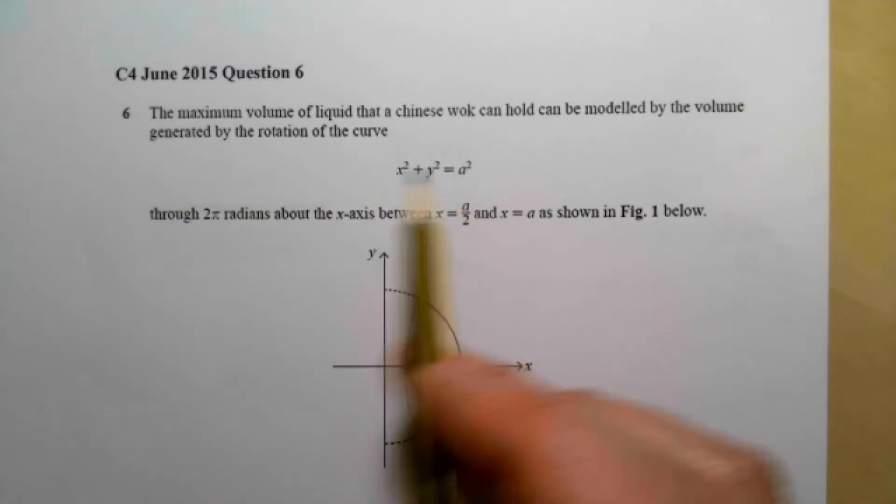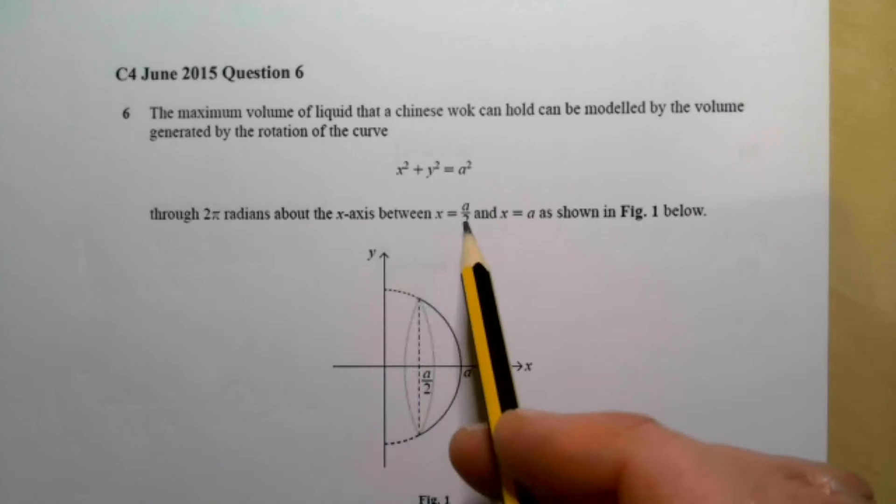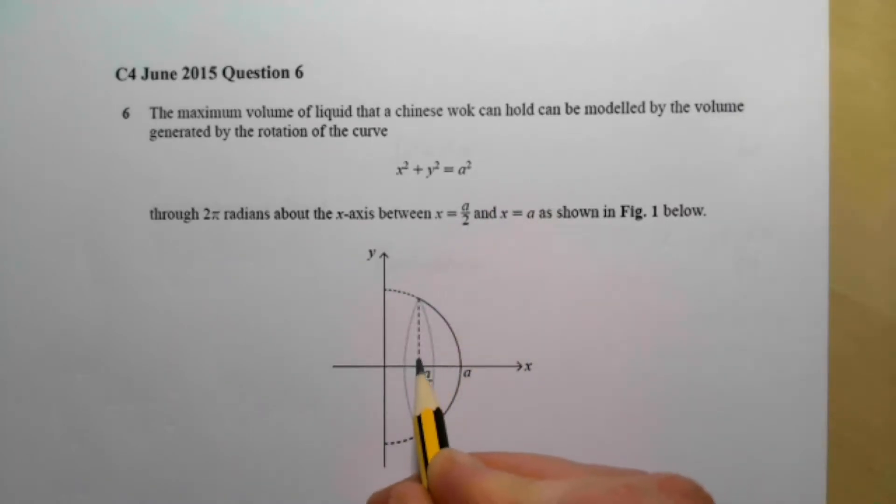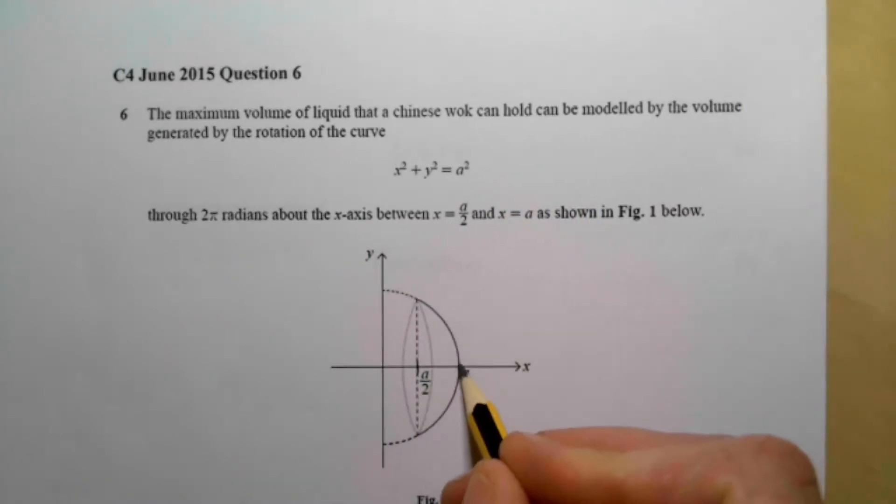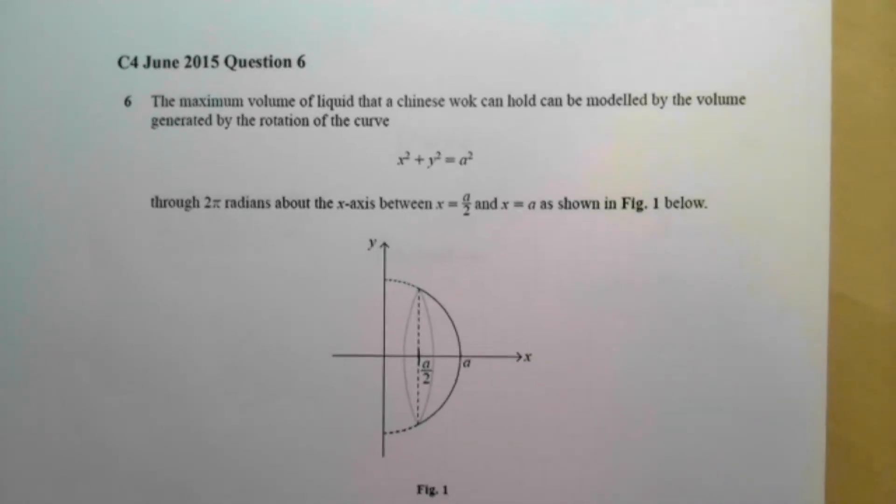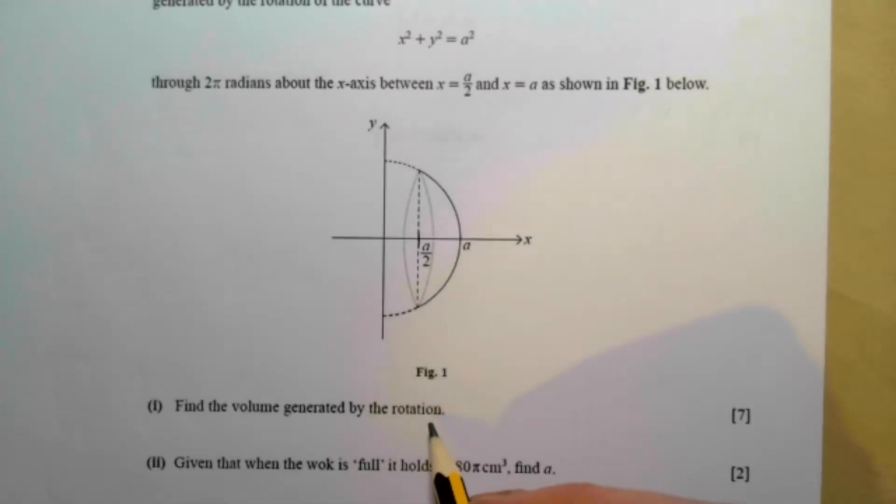x squared plus y squared equals a squared, through two pi radians of the x-axis between a over 2. So there's your a over 2 there, and x equals a, as shown below. Find the volume generated by the rotation.